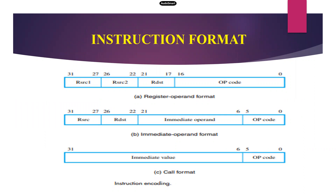Generally, there are three types of instruction format available: one is called R format, another one is I format, and the third one is called J format. The R format is most suitable for arithmetic and logic instructions. I format is most suitable for memory operation instructions, immediate value instructions, and branch equal instructions. J format is suitable only for unconditional control statements.